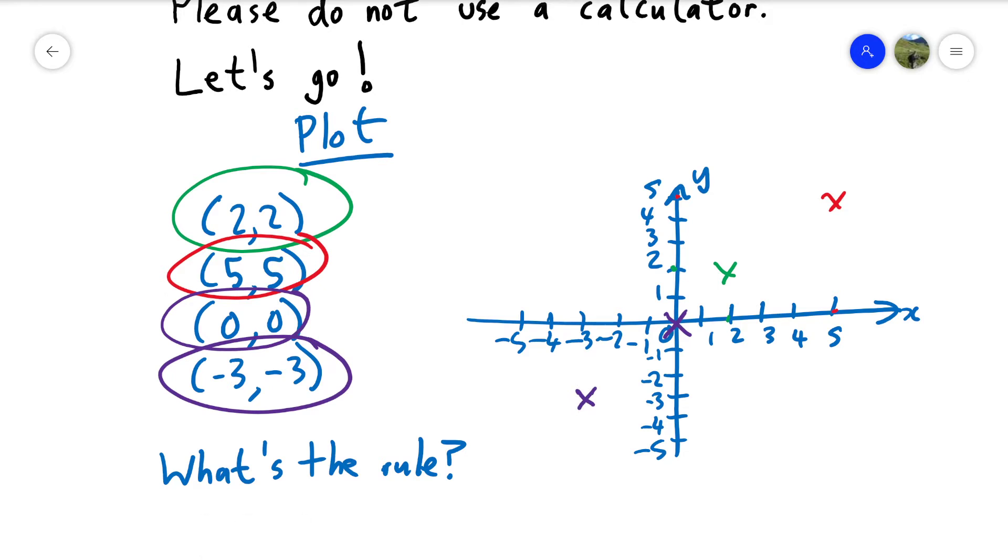So we can now go, oh look, I can see a line. My graph's a little bit messy, but it should have been a straight line. What's the rule? What is true all the way along that line? The number on the left is the same as the number on the right.